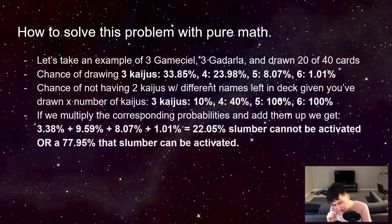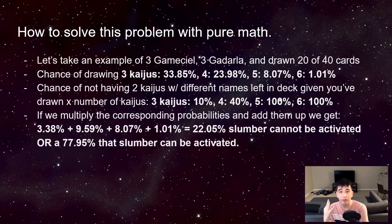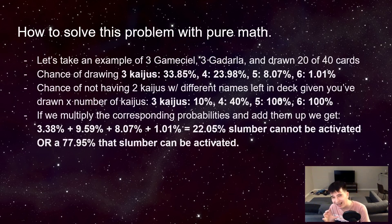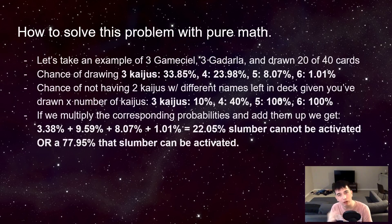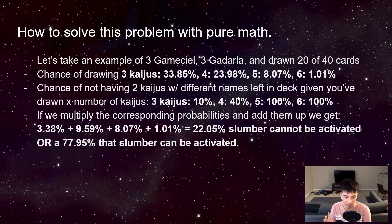But it's not that simple, because if we draw three Kaijus — meaning we have three Kaijus left in our deck — does that mean we can activate Slumber? Not quite, because what if all three Kaijus are all three Gamma Seals? We've got to calculate that, and that's where it gets a little complicated.